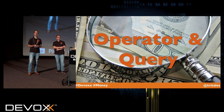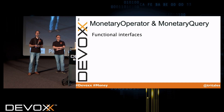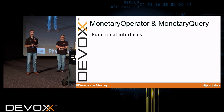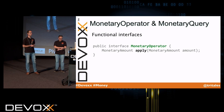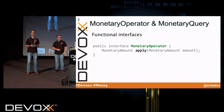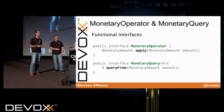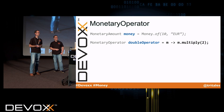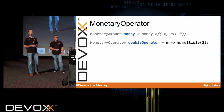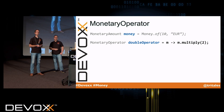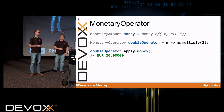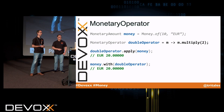Let's talk about operators and queries. The JSR provides two functional interfaces: MonetaryOperator and MonetaryQuery. MonetaryOperator takes a MonetaryAmount, applies an operation to it, and produces a new MonetaryAmount. MonetaryQuery takes a MonetaryAmount and retrieves some information from it, like the currency code or the number of fraction digits. So let's take a look at an example — we have an amount of ten euros which we want to multiply by two. We can use a lambda expression. There are two ways to apply it: either use the apply operation of the operator, or use the with method of the MonetaryAmount.